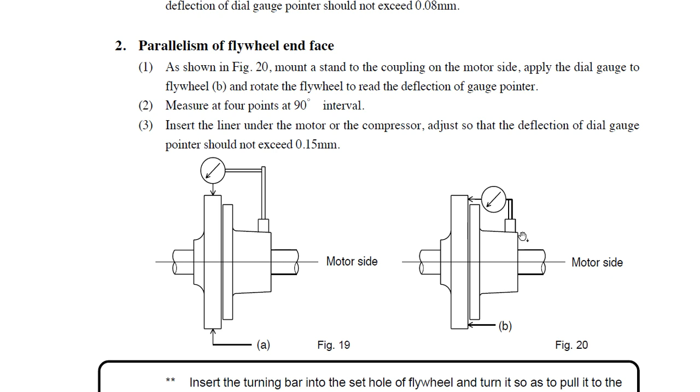In this figure, as you can see, we place the gauge on the motor side on this surface. The measurement is the same: four different points by 90-degree intervals. Insert the liner under the motor of the compressor and adjust so that the deflection of the dial gauge is within the limit. Here we have a different measure: 0.15 millimeters.